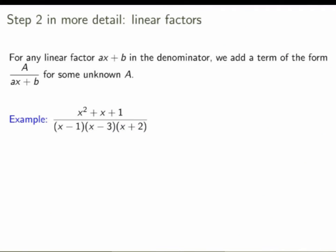There are three cases to look at in detail. The first case is whenever you have a linear factor in the denominator: you add a term of the form A over the linear factor for some unknown A. For example, given a fraction with three linear factors in the denominator, the partial fraction decomposition will have three terms — a over (x minus 1), plus b over the second factor, plus c over (x plus 2) — with different unknowns for each.